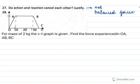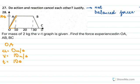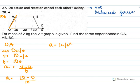For a mass of 2 kg, a V-t graph is given. Find the force experienced along OA. For OA: initial velocity u = 0 m/s, final velocity v = 10 m/s, time t = 10 seconds. Acceleration = (10 − 0)/10 = 1 m/s². Force = m × a = 2 × 1 = 2 Newtons.